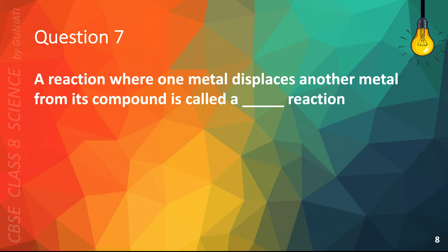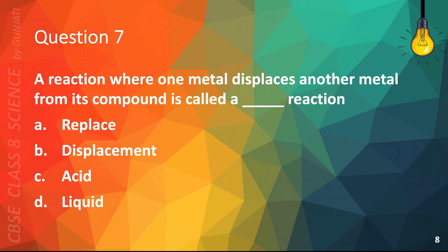Question 7: A reaction where one metal displaces another metal from its compound is called a blank reaction — A. Replace, B. Displacement, C. Acid, or D. Liquid. The correct answer is B. Displacement.